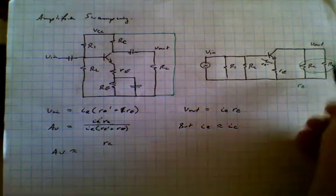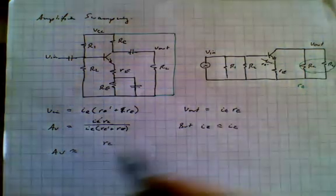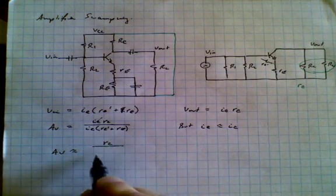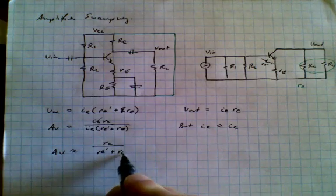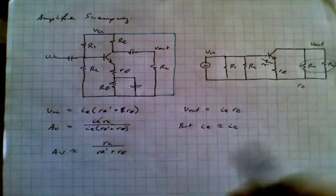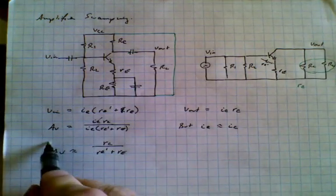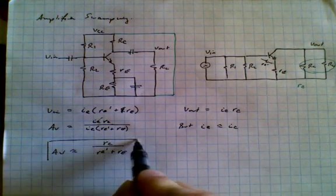And we can now say that the voltage gain is approximately equal to Rc, the parallel combination of the resistors in the collector, divided by Re prime plus the unbypassed emitter resistor. So this is the gain of this circuit.